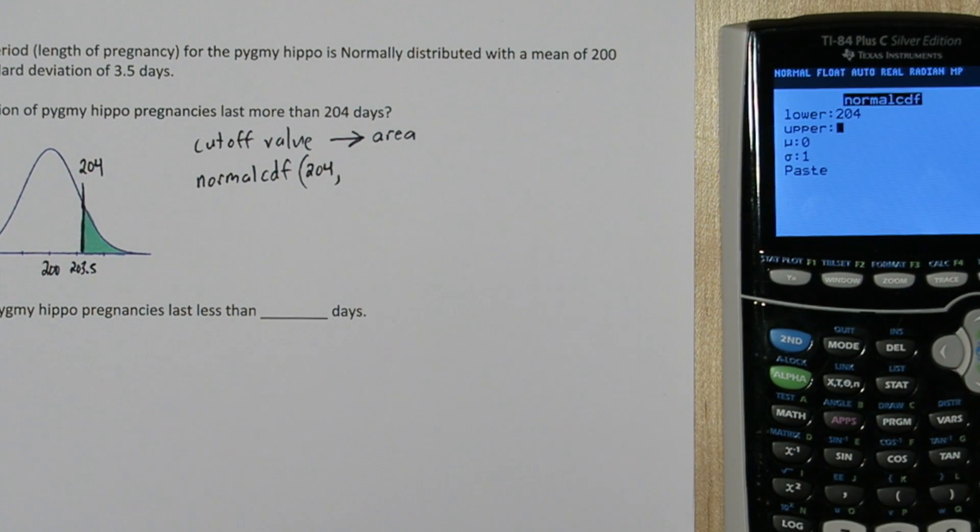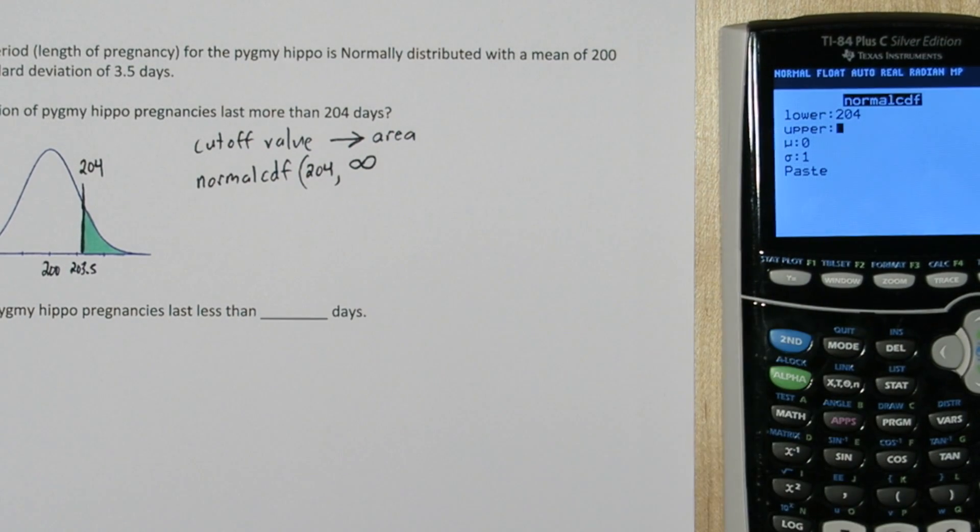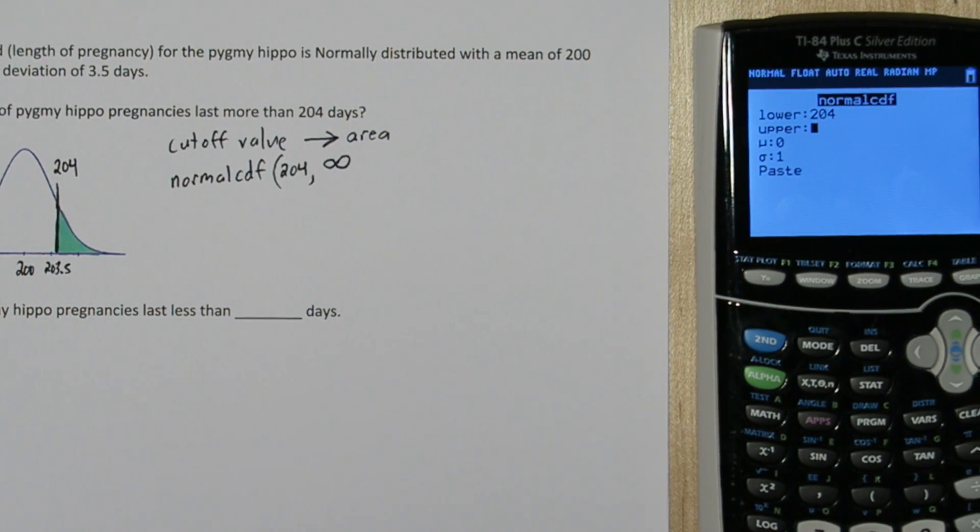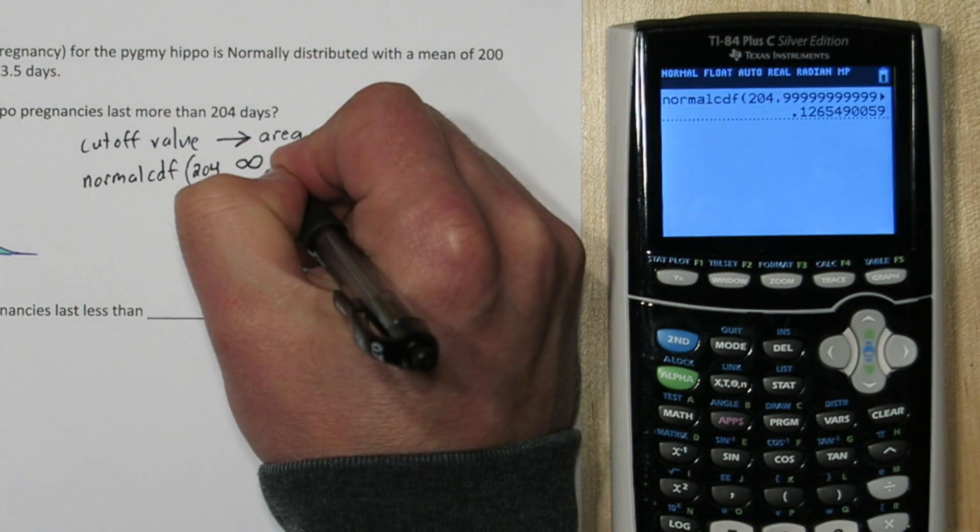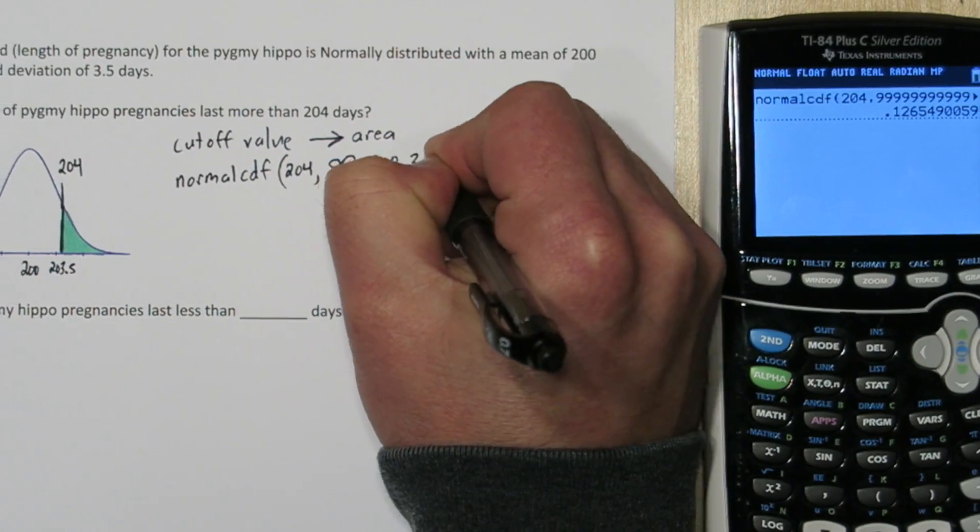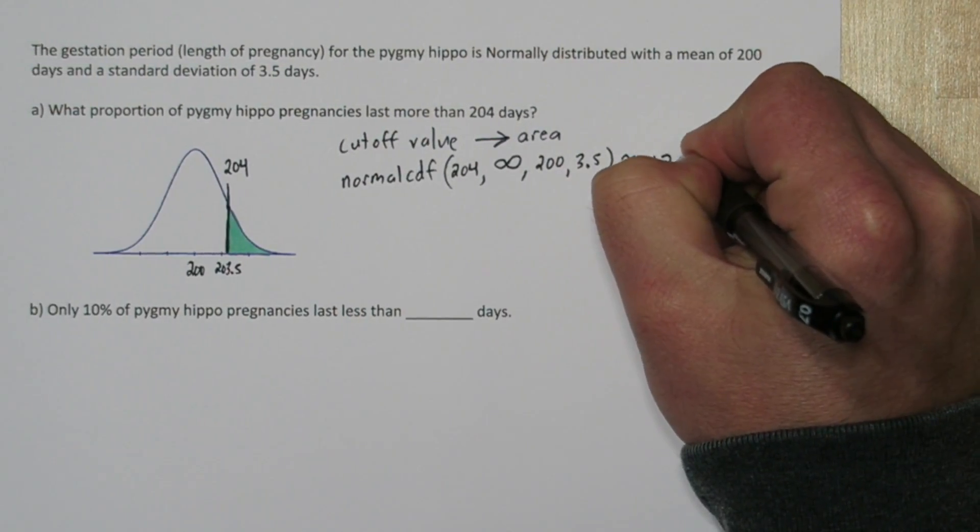Next it asks, what's your upper limit? We don't have an upper limit. We're going to go all the way to positive infinity, which we can't input into the calculator. So let's just type a bunch of nines. For mean we're going to put 200, and for standard deviation, 3.5. Now when we press enter on paste, and then enter again, here's our area. So the proportion that lasts longer than 204 days is about 0.1265.